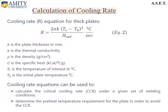In both equations, H represents the plate thickness, K represents the thermal conductivity, R represents the density, C represents the specific heat, TI represents the temperature of interest, and T0 represents the initial plate temperature. These cooling rate equations can be used to calculate the critical cooling rate under a given set of welding conditions, and to determine the preheat temperature requirement for the plate in order to avoid exceeding the critical cooling rate.